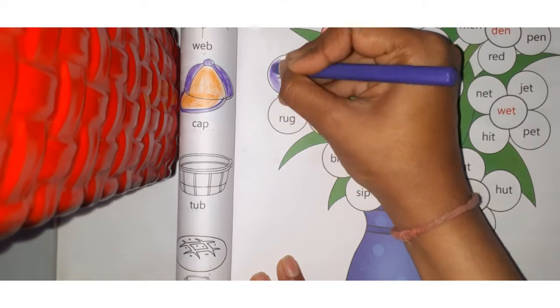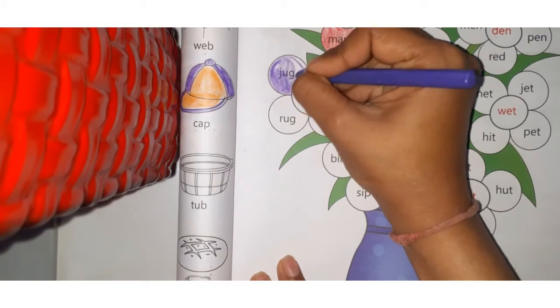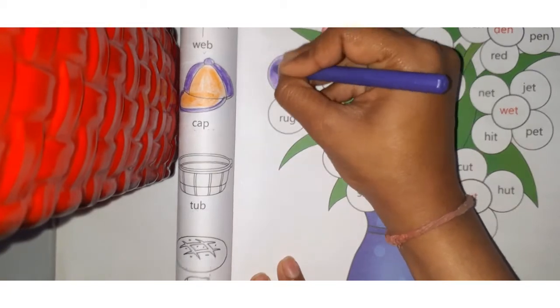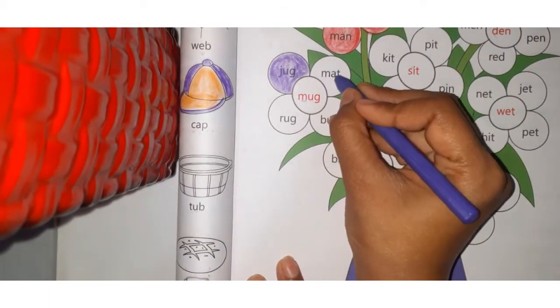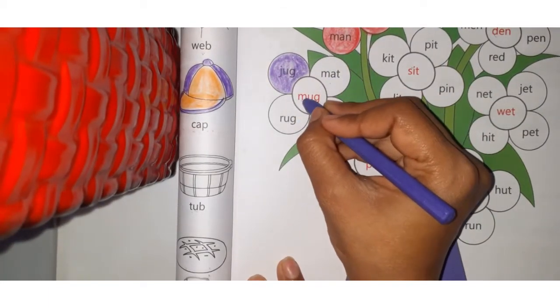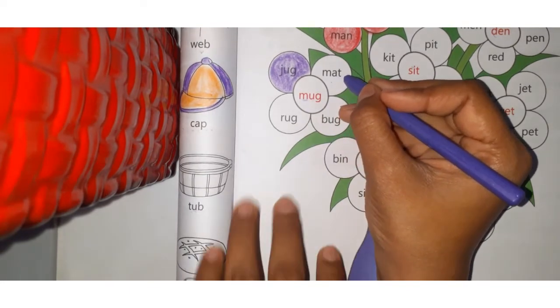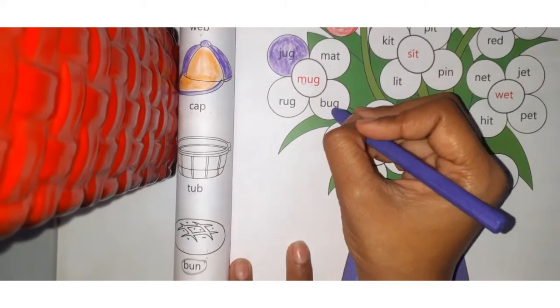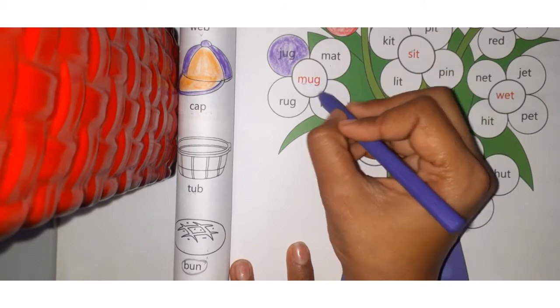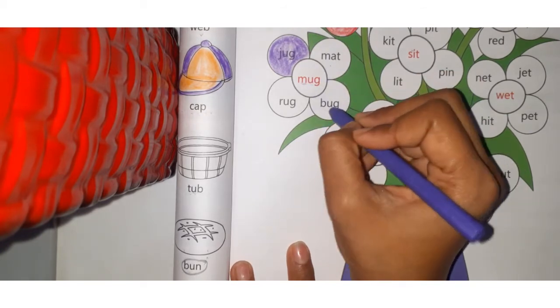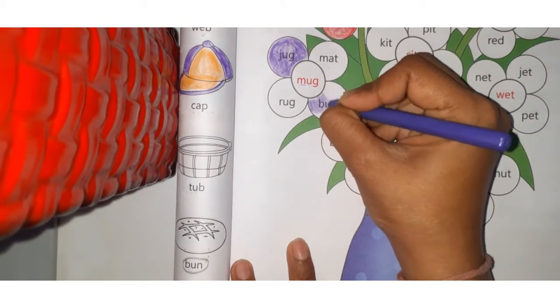I am going to color the word jug. Next: MAT, M-A-T, mat. Mug, mat - are they similar? No, they are not, so leave this one. Next: BUG, B-U-G, bug. Bug, mug, bug - yes, they are similar, so these are rhyming words. Color the word petal bug.